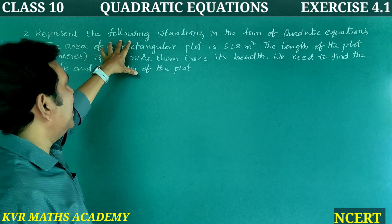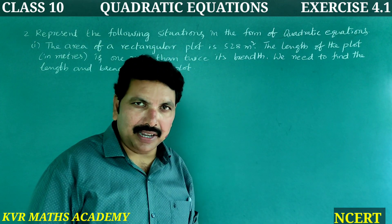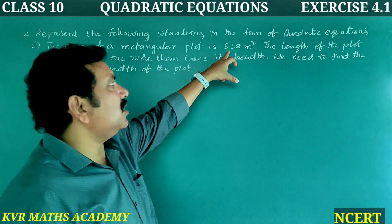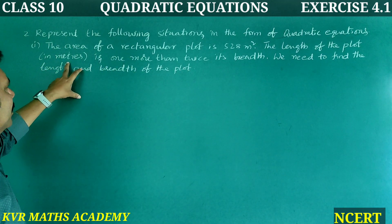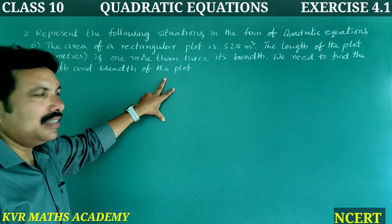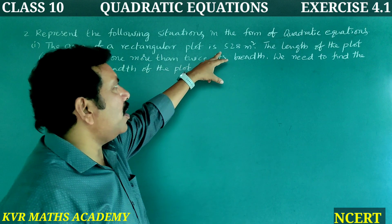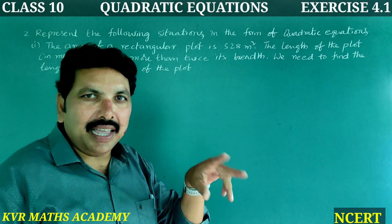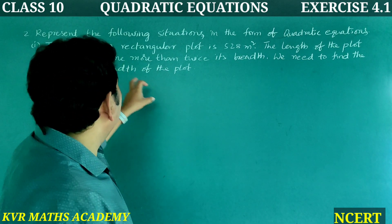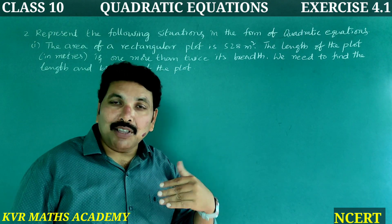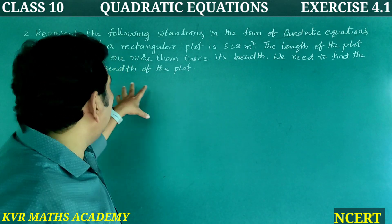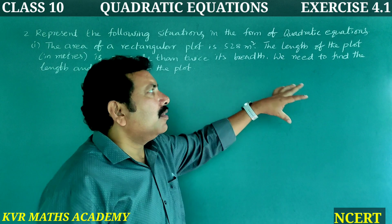Second question: Represent the following situations in the form of quadratic equations. There are four problems. First question: The area of a rectangular plot is 528 square metres. The length of the plot in metres is one more than twice its breadth. We need to find the length and breadth of the plot.